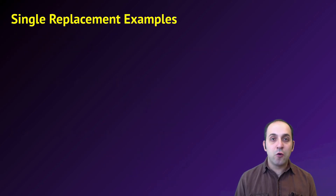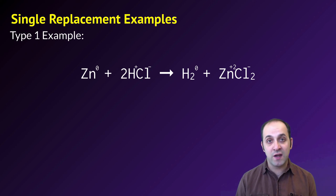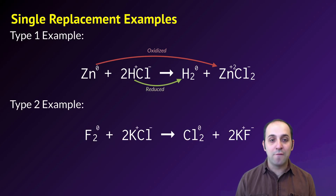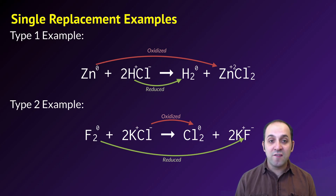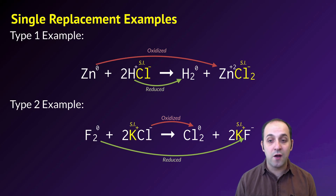Looking at examples: for type one, zinc replaces hydrogen in hydrogen chloride to produce hydrogen gas and zinc chloride — zinc is oxidized and hydrogen is reduced, with chloride ion as the spectator. For type two, fluorine takes the place of chlorine in potassium chloride — chlorine is oxidized and fluorine is reduced, with potassium ion as the spectator ion.